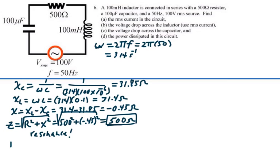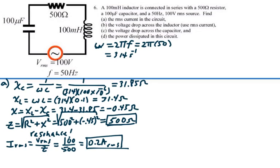So our RMS current is our RMS voltage divided by the impedance. So that is going to be 100 volts, which was given to us, divided by 500 ohms, or 0.2 amps root mean square. So that is our root mean square current. That's our answer to part A.